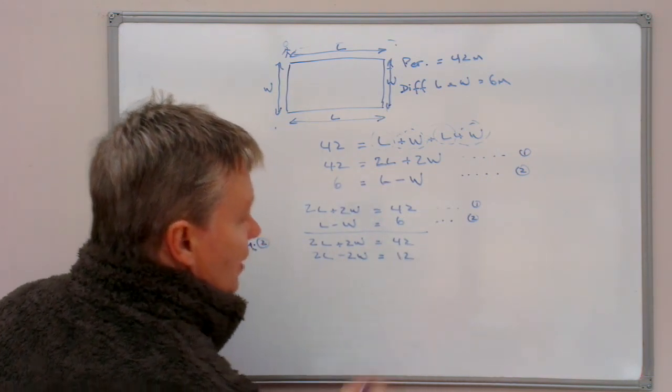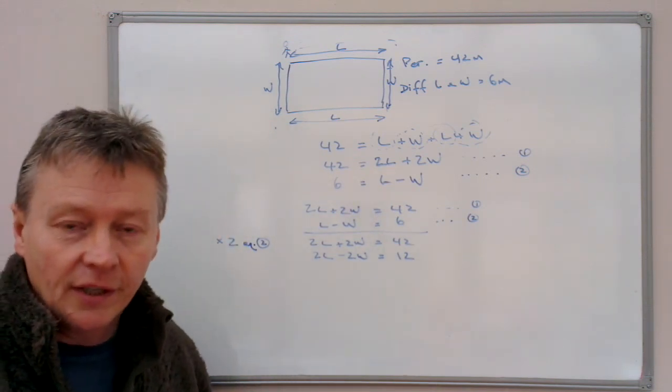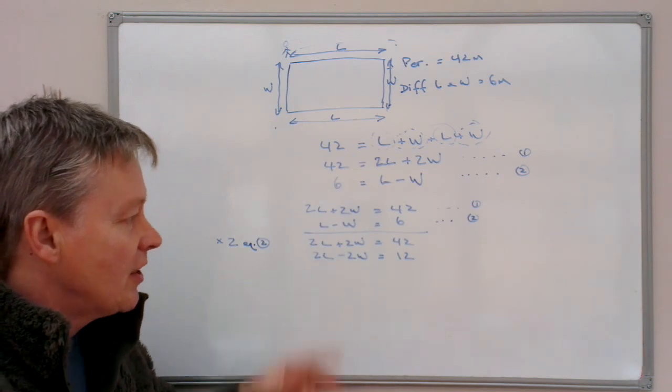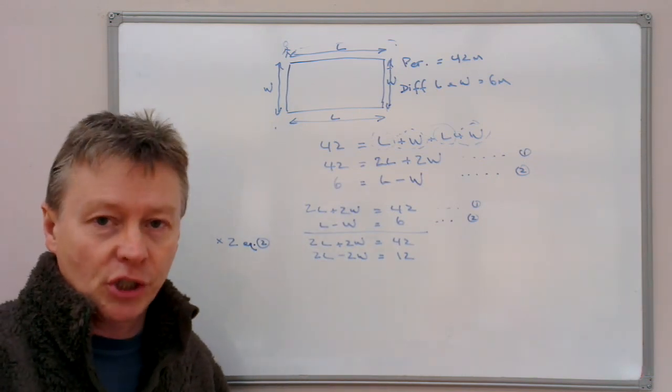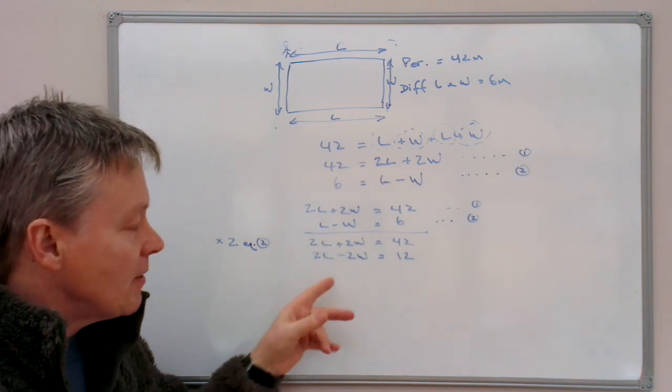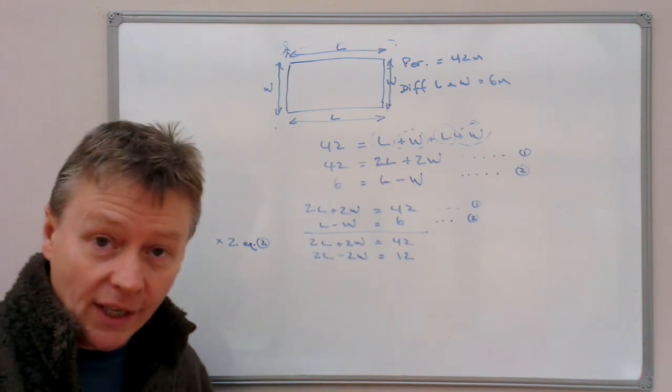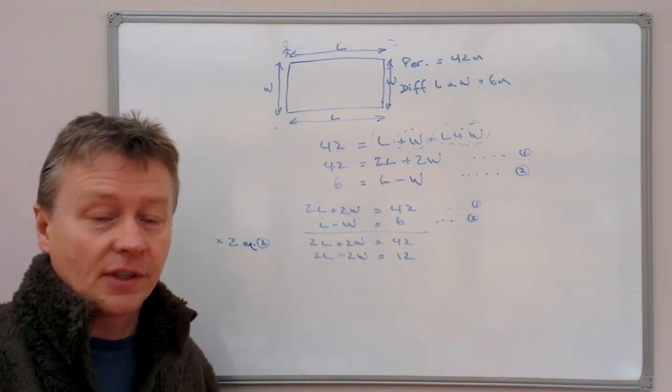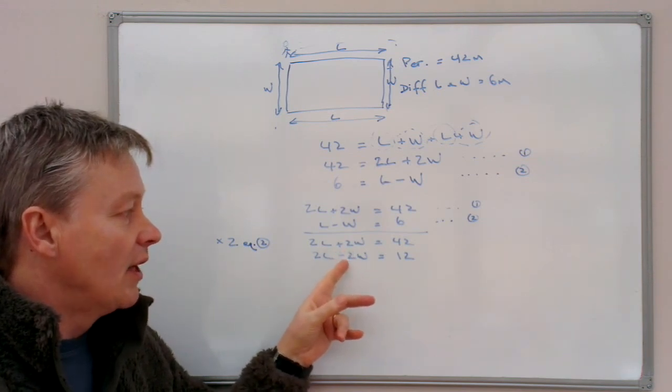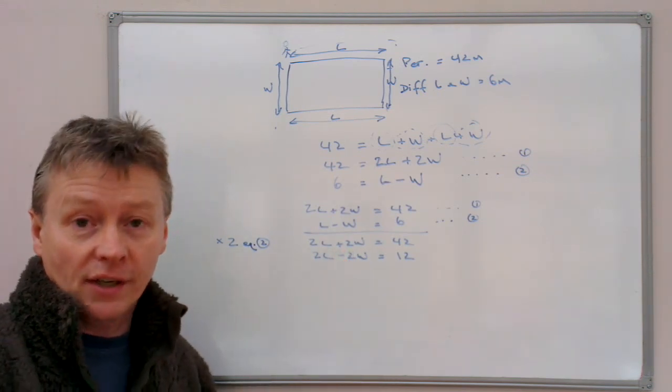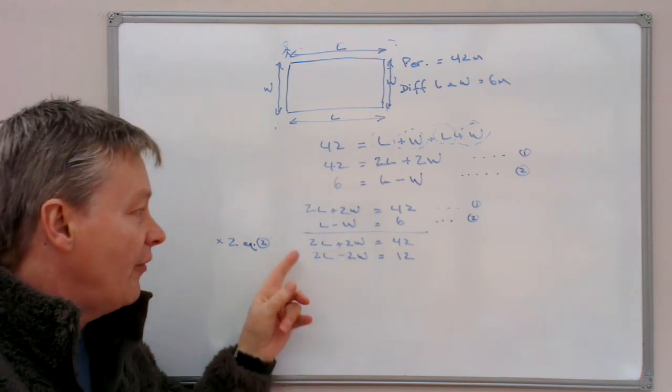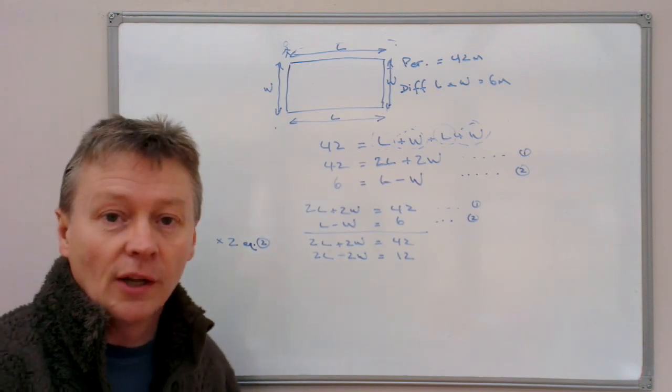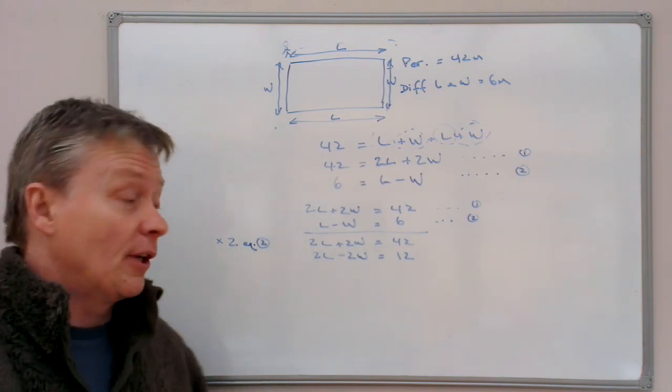Now if you look at the other videos on solving simultaneous linear equations, you'll see that I haven't actually changed this equation at all. I've just simply multiplied it by 2. And it just makes my life a little bit easier now because what I can do is I can add these terms together. And if I add these two equations together, positive 2W added to negative 2W means that I will cancel it out. So I'm left then with 2Ls on that equation, and 42 and 12 on that equation. So that's exactly what I'm going to do.